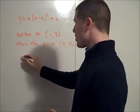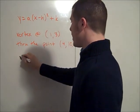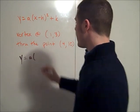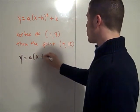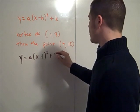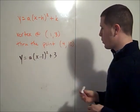I know, because my vertex is at (1,3), that I have y equals a times (x minus 1) squared plus 3, because my vertex is the point (1,3).